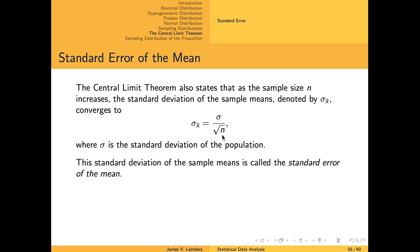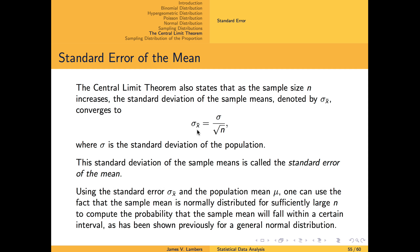We refer to this standard deviation of the sampling distribution of the mean, sigma x-bar, as the standard error of the mean. Because the sampling distribution of the mean behaves like a normal distribution for which the mean and standard deviation are known, we can readily estimate the probability that the sample mean falls within a given interval, which is a cornerstone of inferential statistics in which conclusions about a population are made from samples.